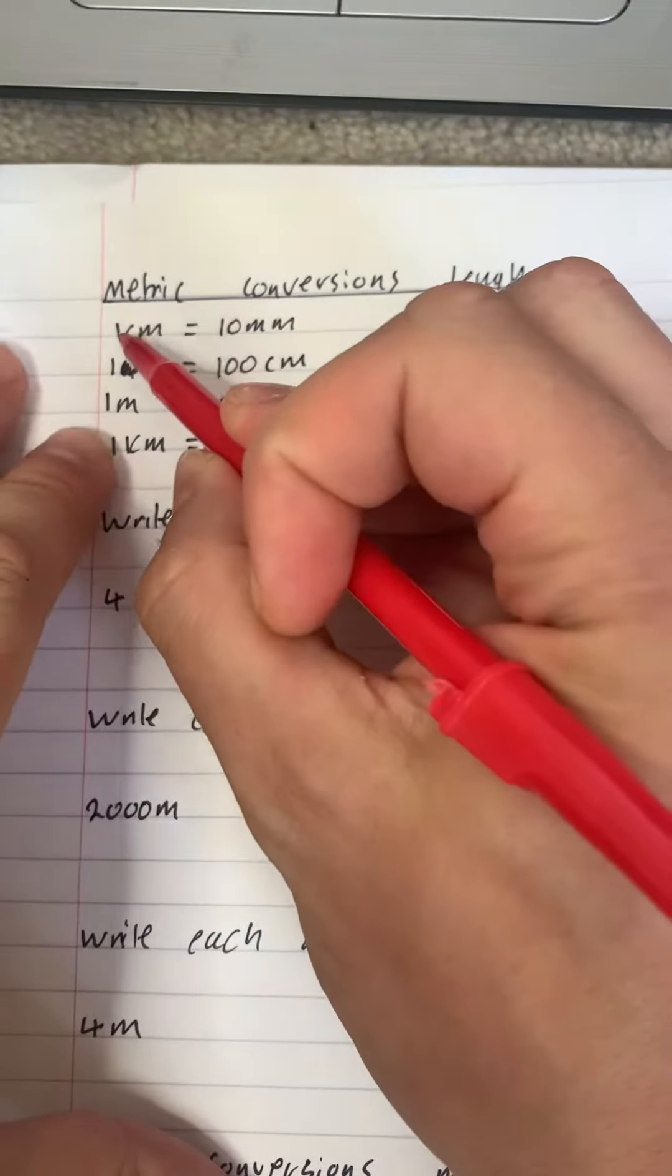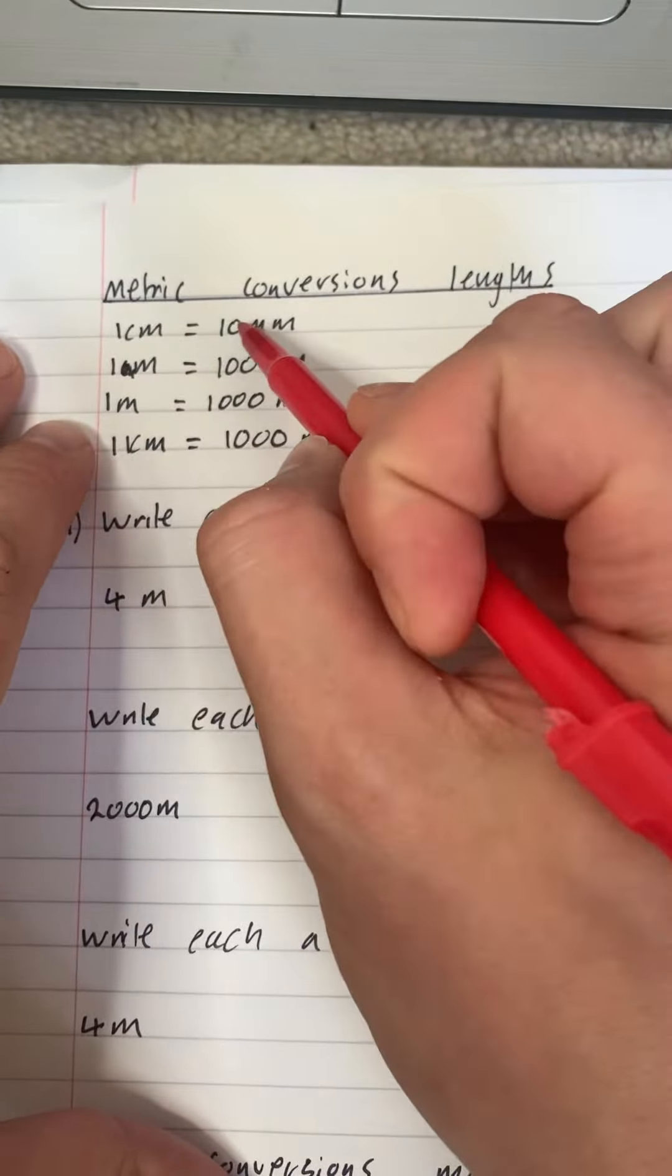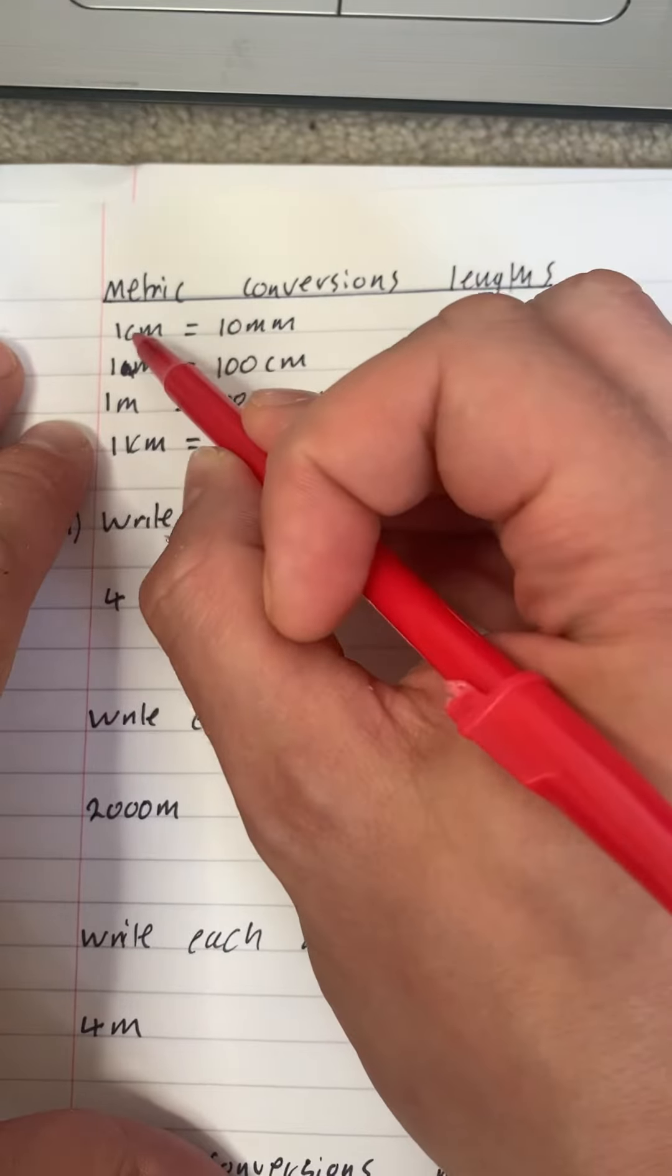Metric conversions. If we go from the smallest to the biggest, we have to times it, and if we go from the biggest to the smallest, we divide it.